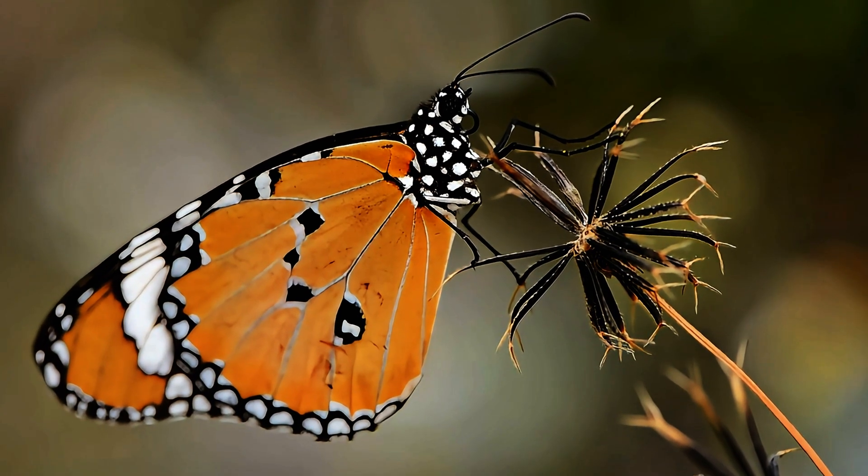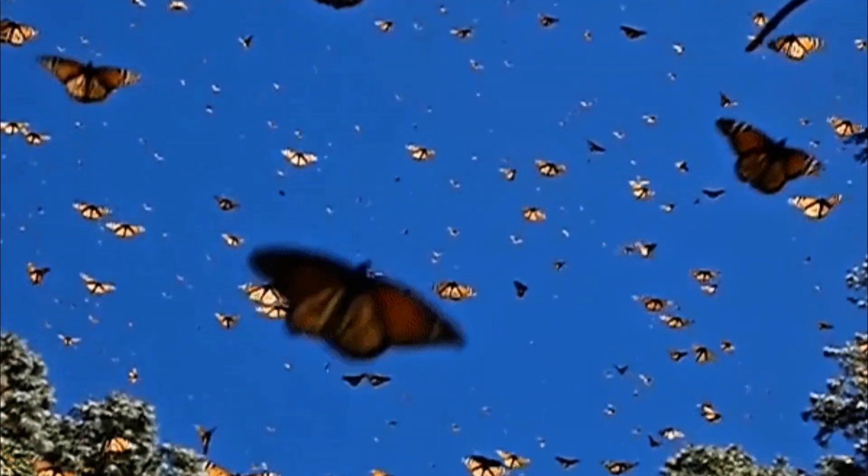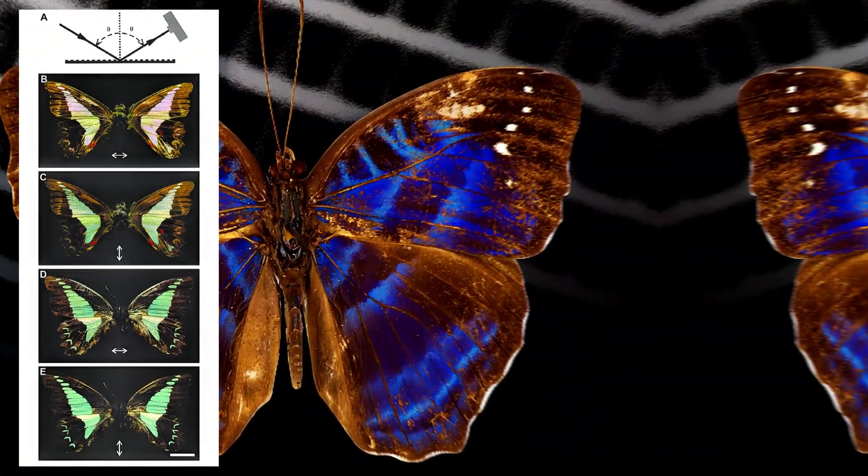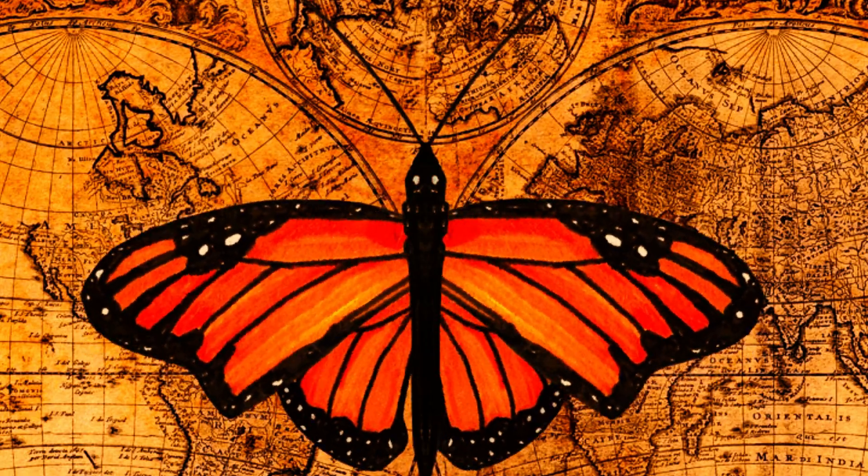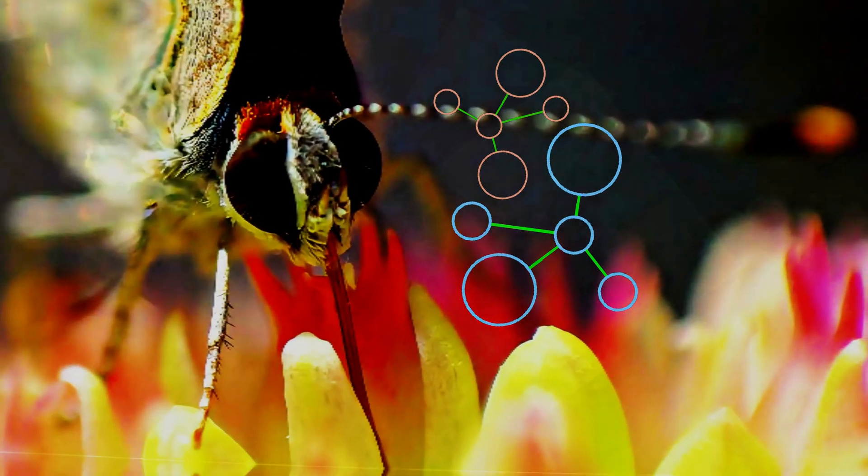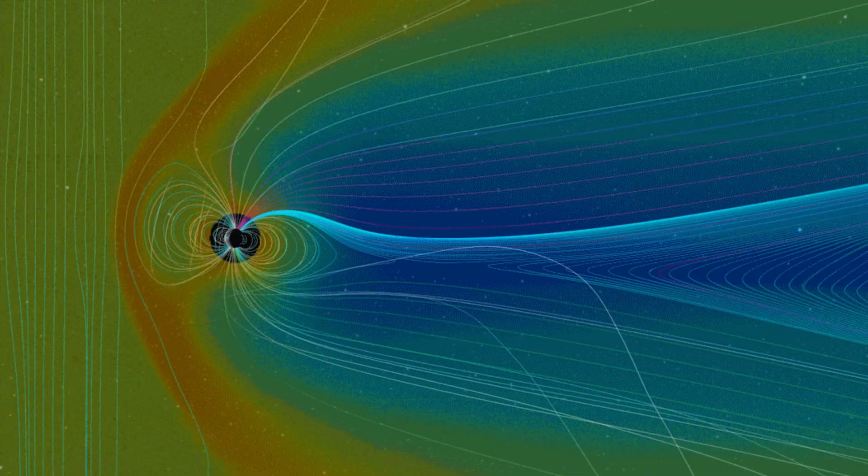Monarch butterflies, during their long migratory journeys, also exhibit a form of quantum navigation. Their ability to navigate relies on the quantum mechanical process within a protein in their antennae that is influenced by blue light and the Earth's magnetic field.